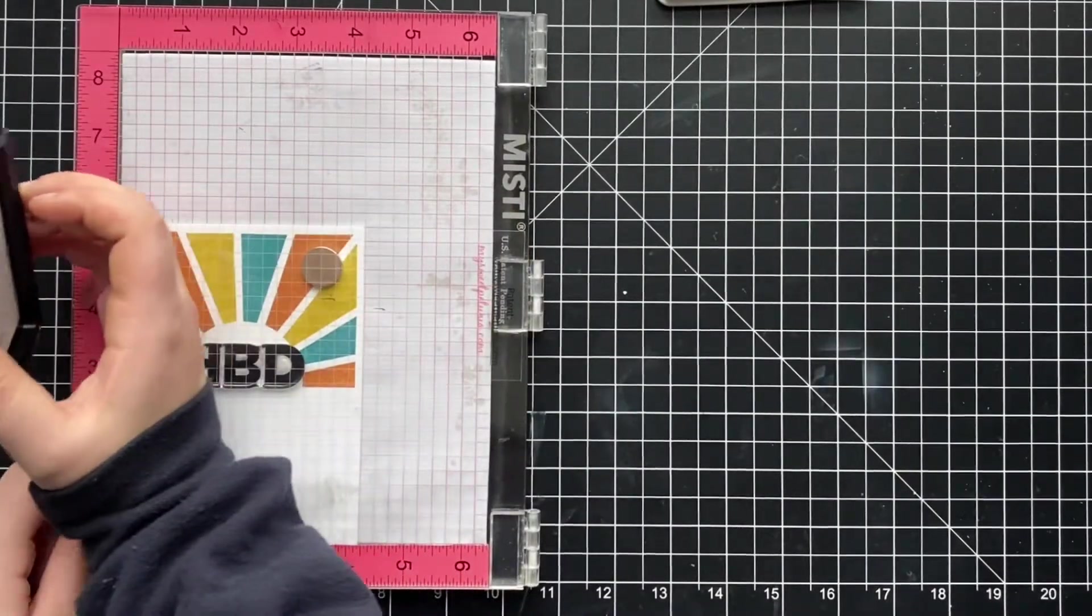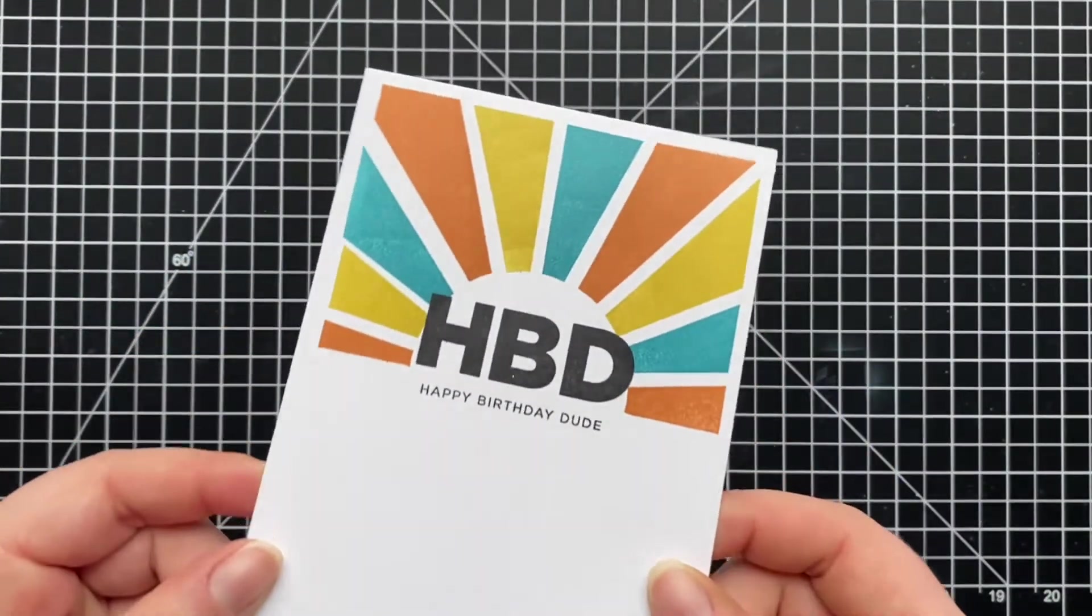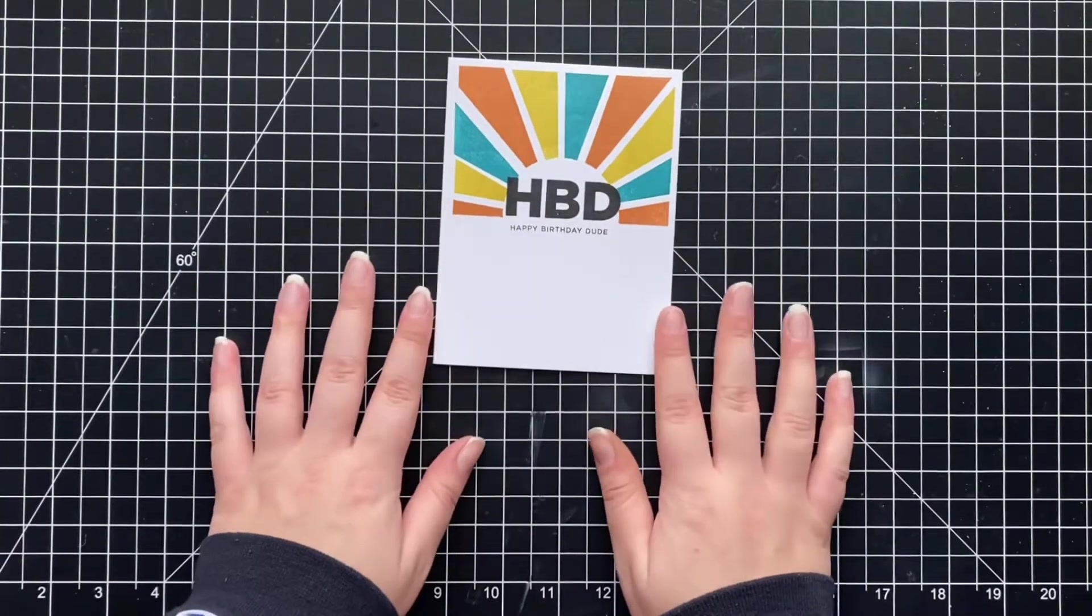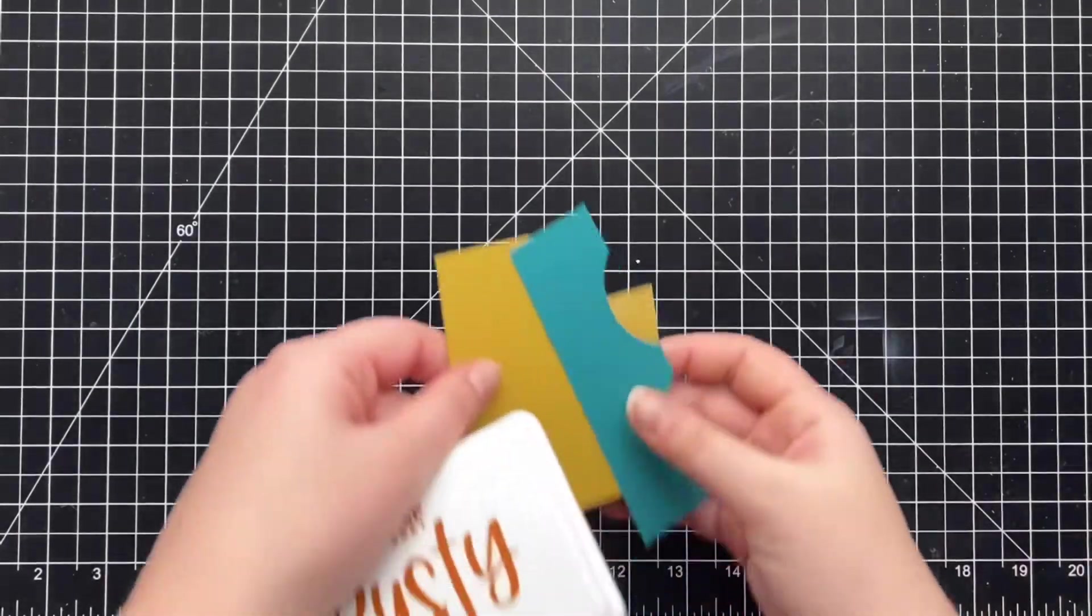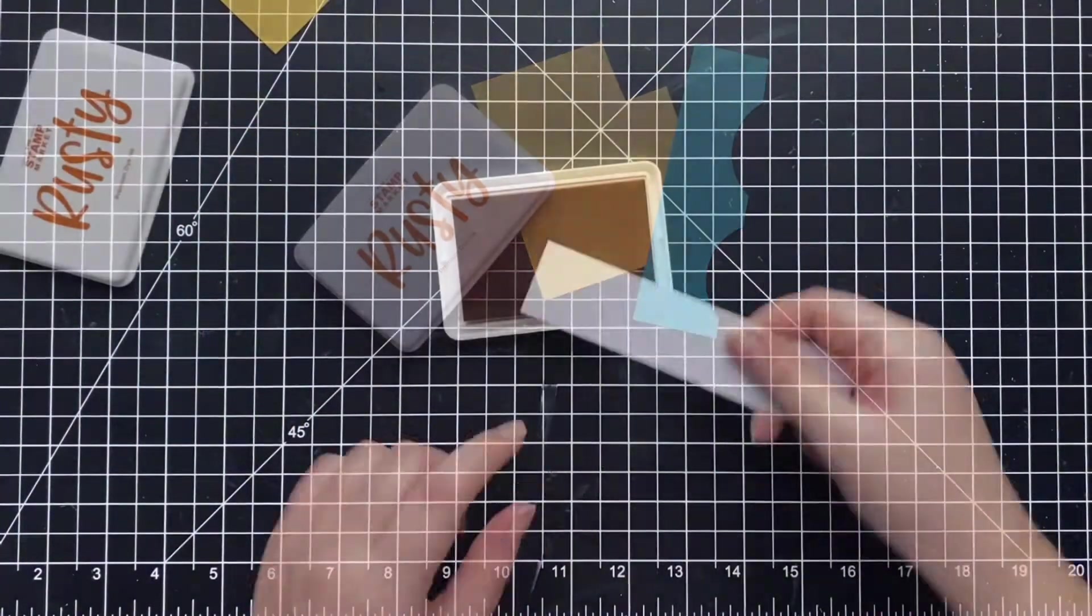I actually stamped down the HBD three times because I wanted it to be really dark and solid and then I stamped happy birthday dude underneath it and that's all using Gina K black amalgam ink. So that was my first card, very clean and simple and I'm going to make another one.